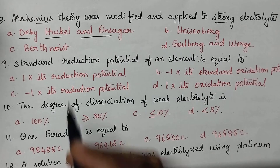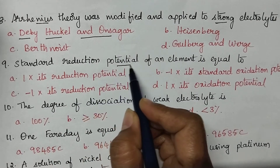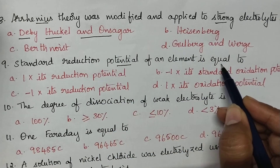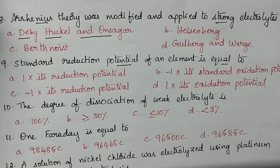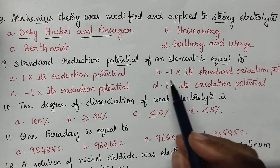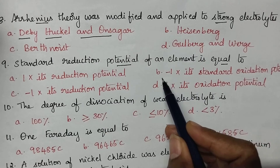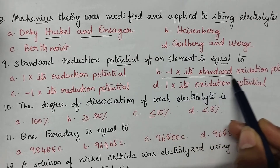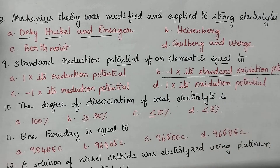The standard reduction potential of an element — what is the relation between standard reduction potential and oxidation potential? Standard reduction potential equals minus the standard oxidation potential, i.e., −1 times its standard oxidation potential.